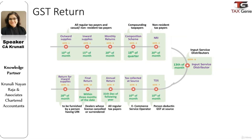GST Return 9 is the annual return and it is due by the 31st of December of the next financial year. This has to be filed by all regular taxpayers. GST Return 10 is the final return, to be filed within three months of the date of cancellation or date of cancellation order, whichever is later. It is to be filed by dealers whose license is cancelled or surrendered.